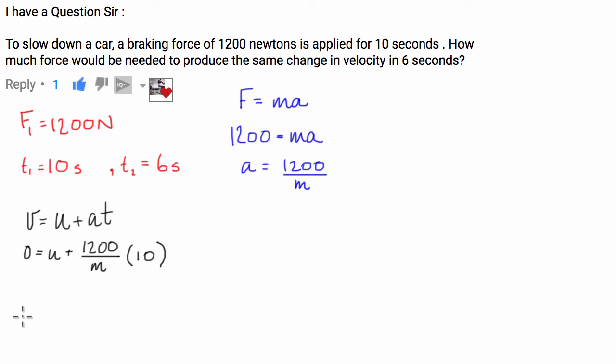So what we can say is we can rearrange this a little bit and have it as, well, U is going to equal, we can times 10 by 1200 to be 12,000 and take over this side. So it's going to be negative 12,000 divided by the mass.